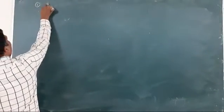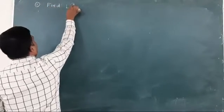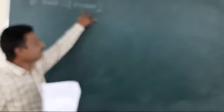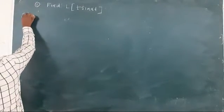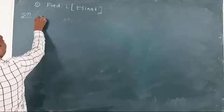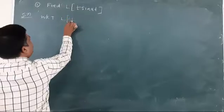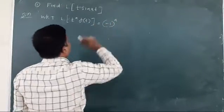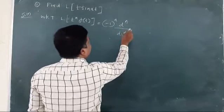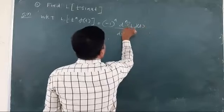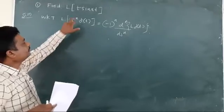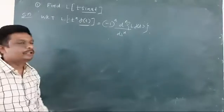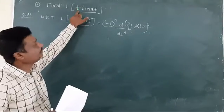We will take one or two examples. Find the Laplace transform of t·sin(at). Here we can observe that sin(at) is multiplied by some factor t. For the solution, I will use the formula L{t^n · f(t)} = (-1)^n · d^n/ds^n [F(s)]. Comparing, here f(t) = sin(at), and t is raised to the power of 1, so n = 1.